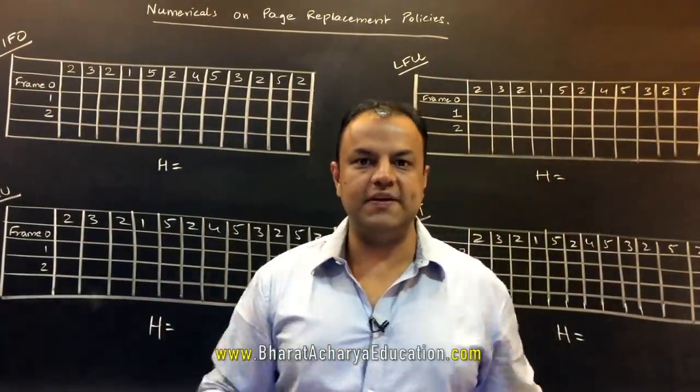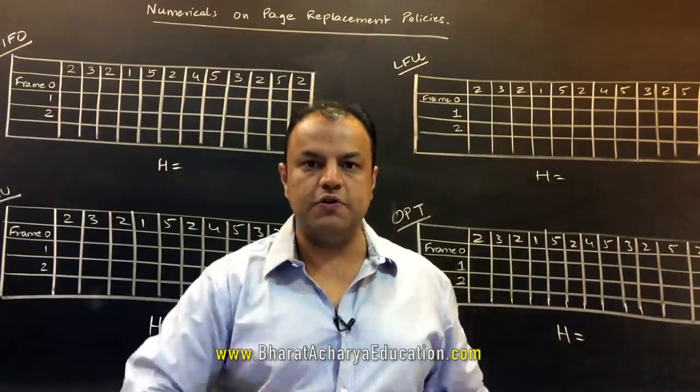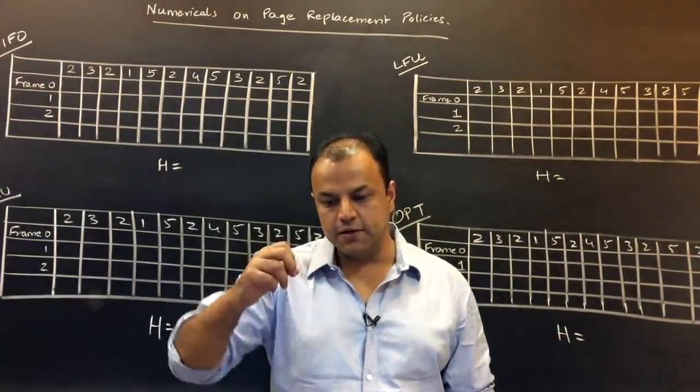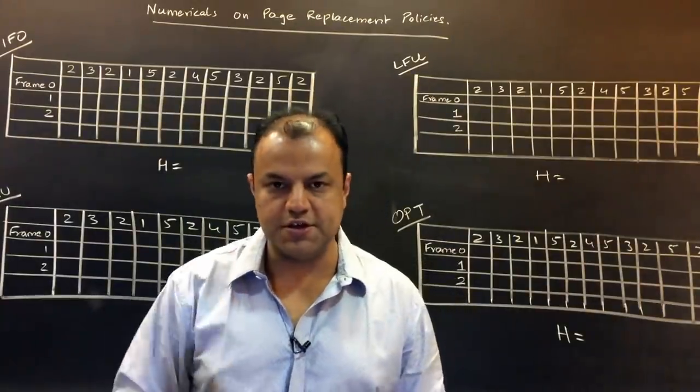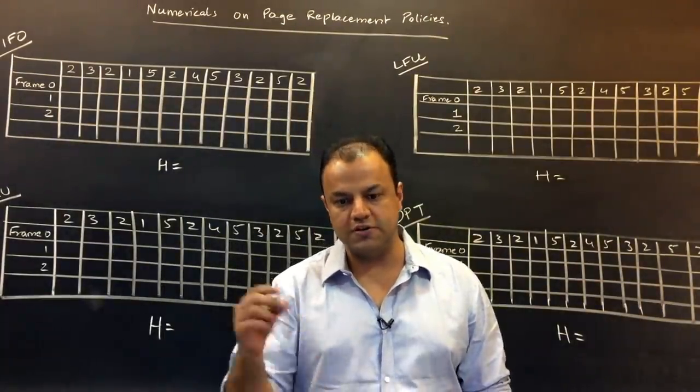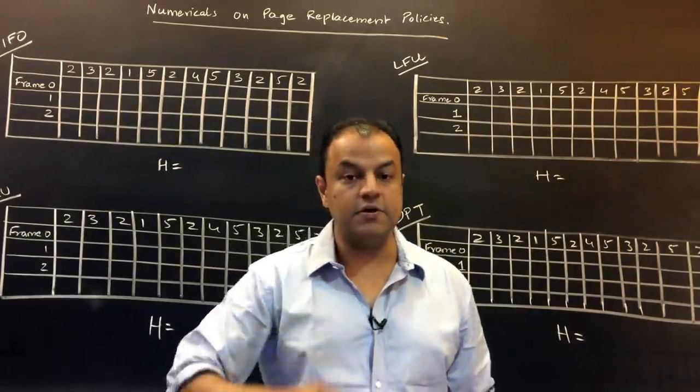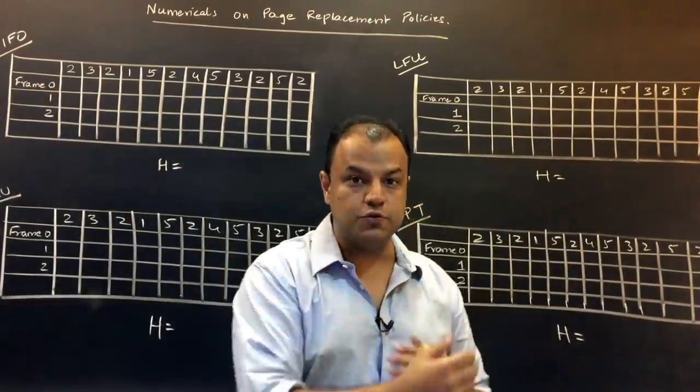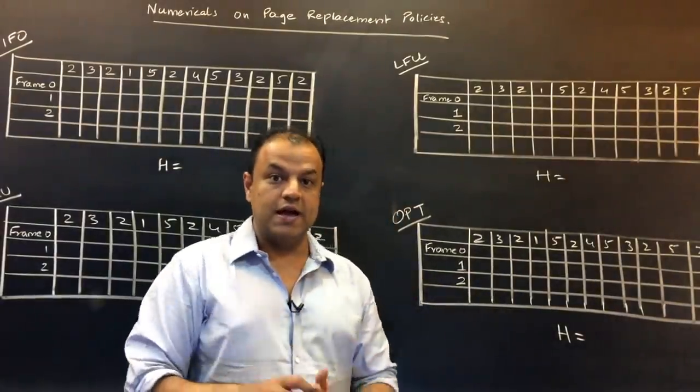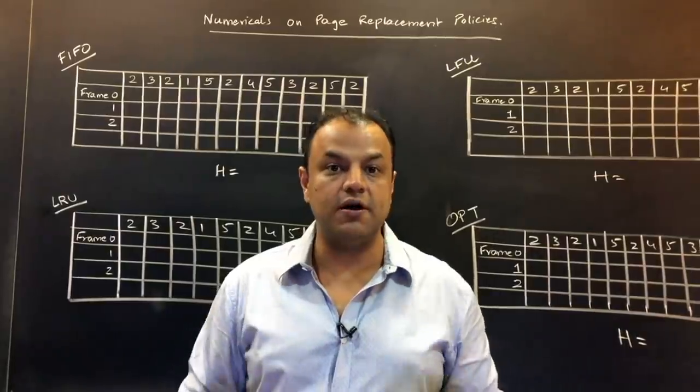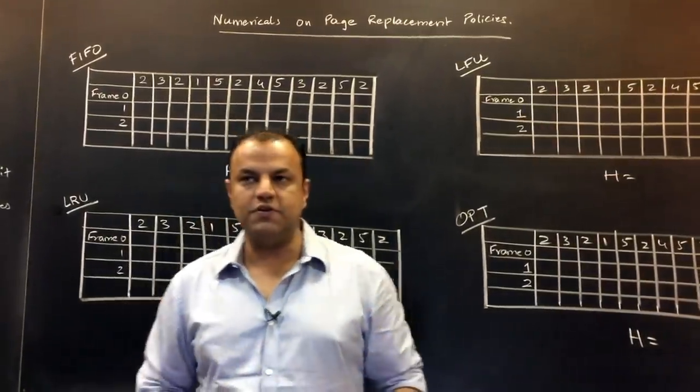There is FIFO which simply says the page that came in first should go out first. There is LRU least recently used which says the pages which are used more recently should stay. The pages that have not been used for longest time should be replaced. LFU, the page that has been used the least number of times should be replaced. Optimal, it looks in the future. The fourth method, it looks in the future and which pages you may require in the future, they will be retained. The ones that are not required will be replaced. So that's the gist of these algorithms.